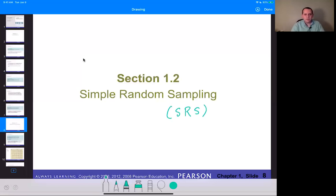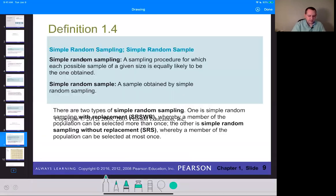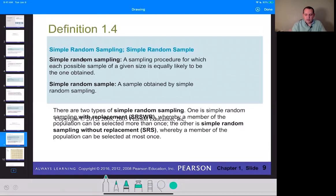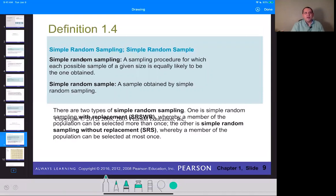And the idea with a simple random sampling is this is just going to be a procedure where any one sample is equally likely. So that's a simple random sampling. And then the sample that you get is called a simple random sample.